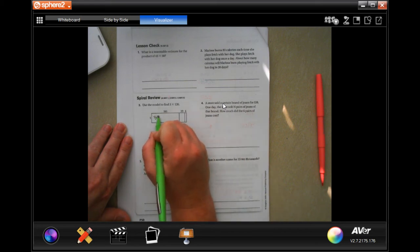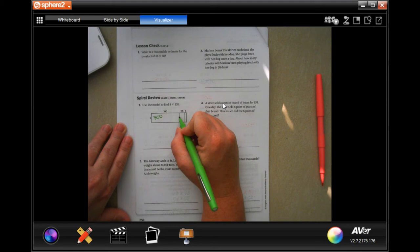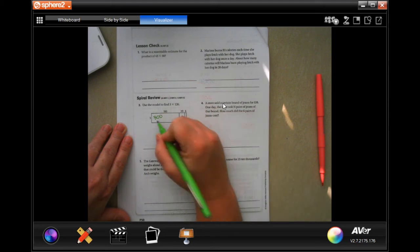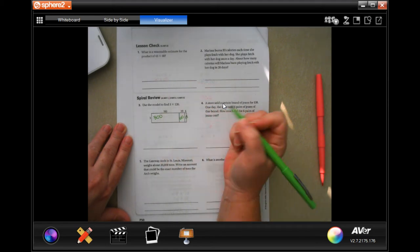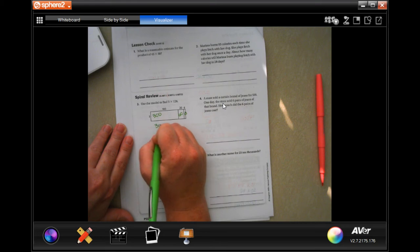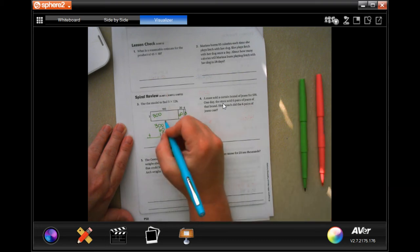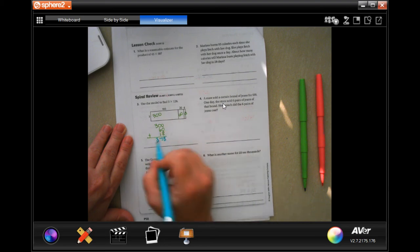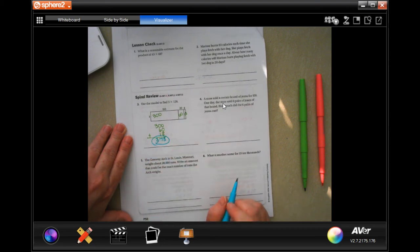Three times 100, 300. Three times 20, 60. And three times six is 18. So now we just go 300, 60, and 18, and we add those up. Zero, zero, eight, eight, six plus one, seven. And bring down our three. 378.